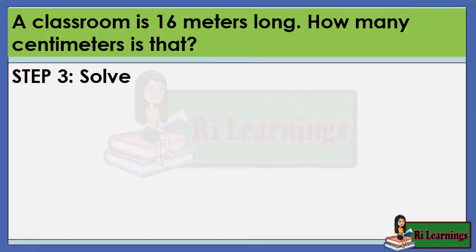Step 3: Solve. 16 times 100 equals 1,600.